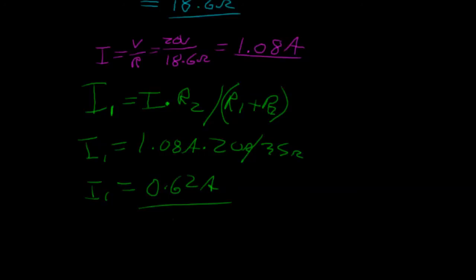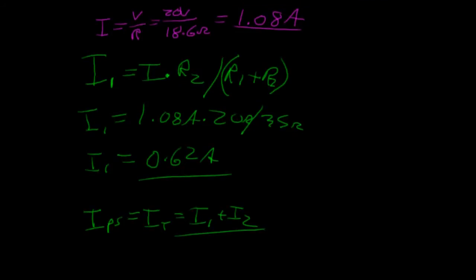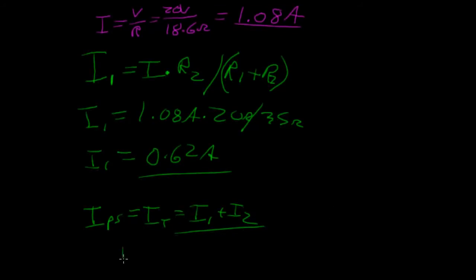The current flowing through I2 or the 20 ohm resistor will be the difference between the two. So I power supply or I total equals I1 plus I2. That's the basis of Kirchhoff's current rule. So I'll just write that down, Kirchhoff's current law.